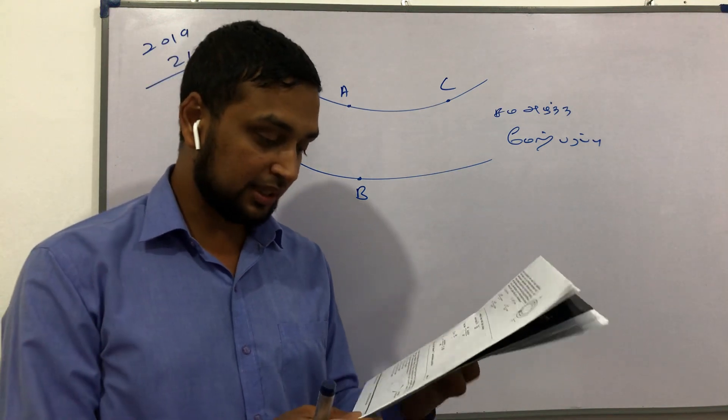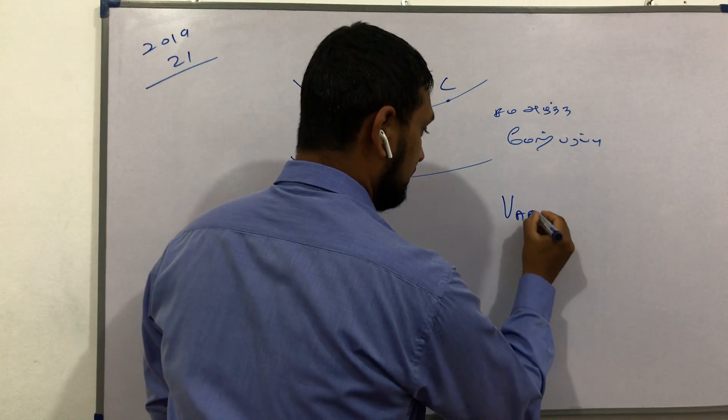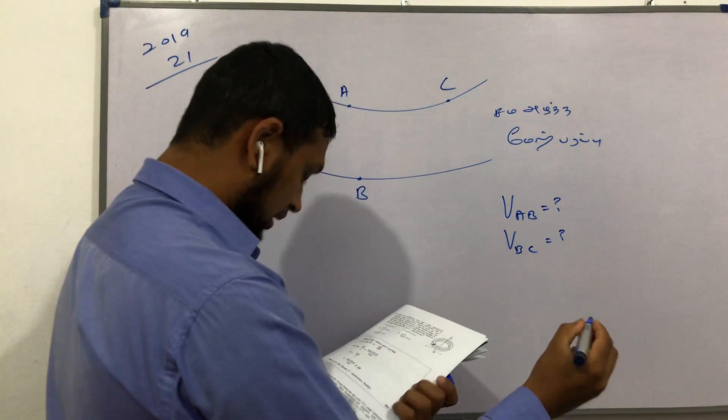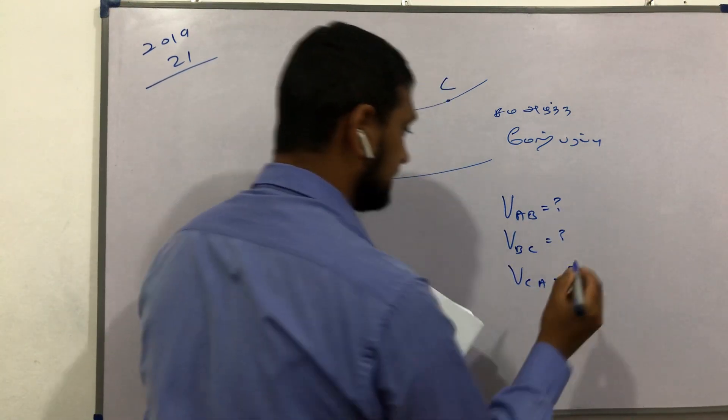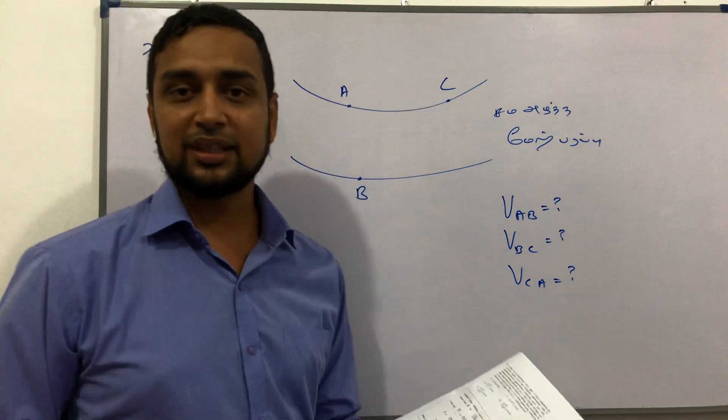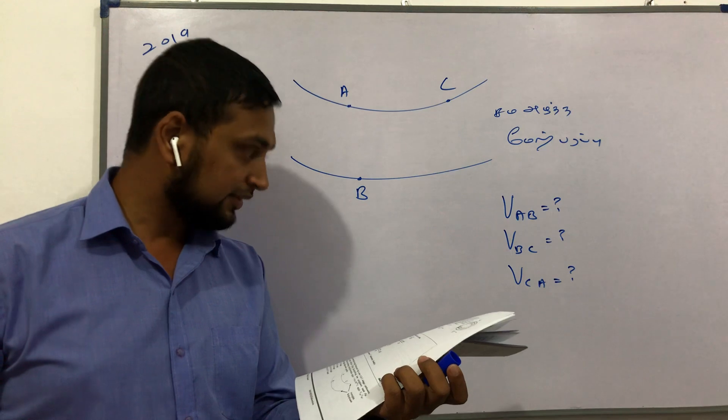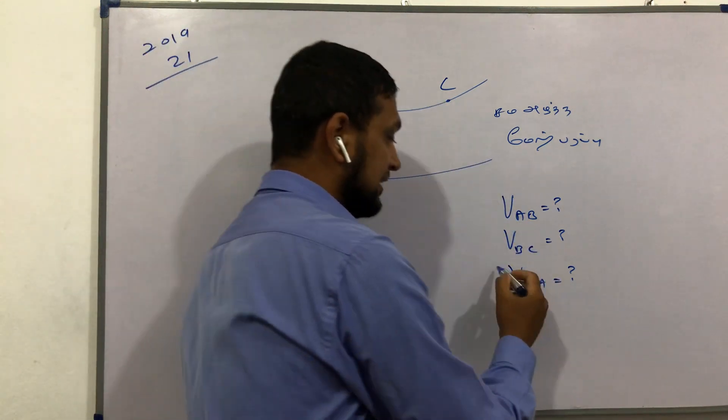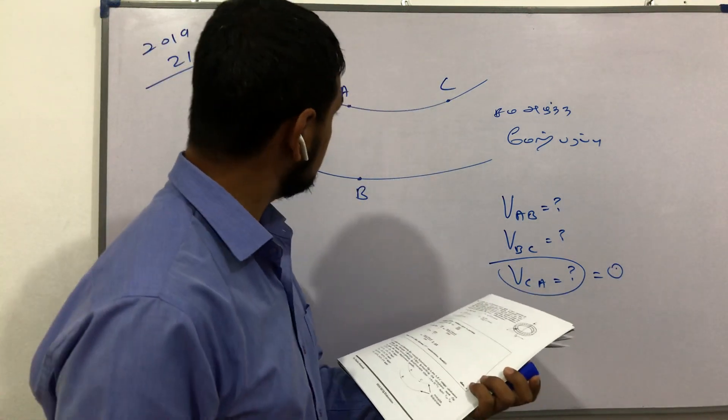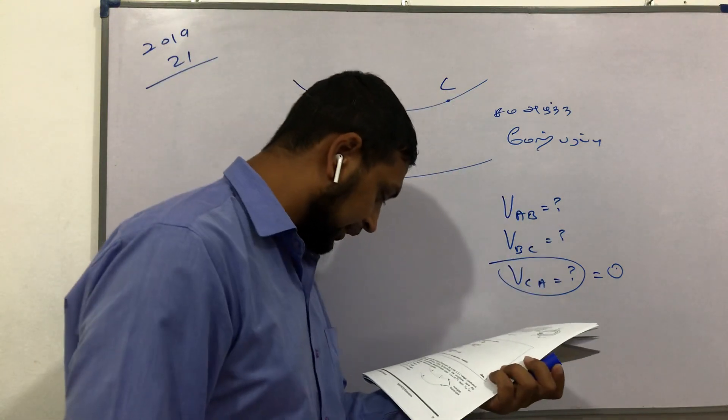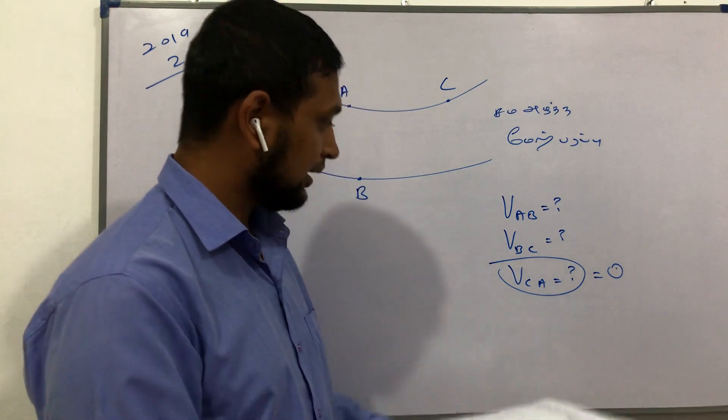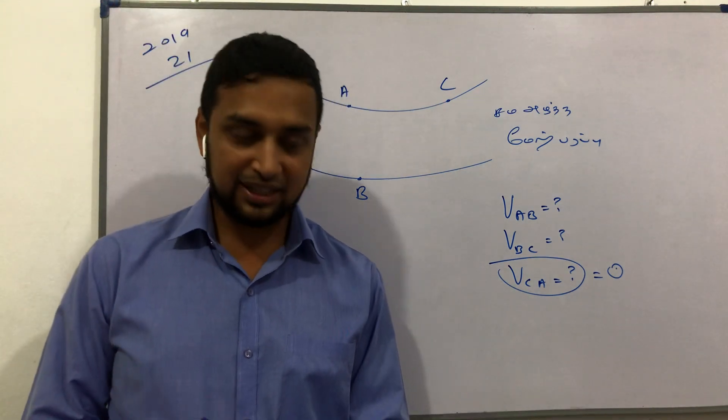This is the first question that we have. We can call it V number VB, VC. We have the voltage VAB, which is the voltage from A to B. Then we have VBC from B to C, and VCA from C to A. If you want to add these voltages together, the sum equals zero.